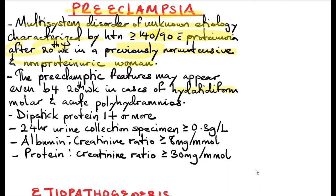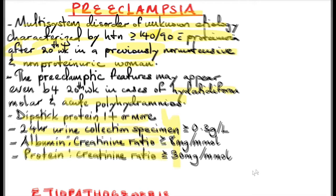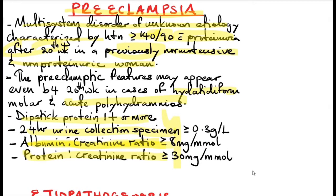This is seen in cases of molar pregnancy and acute polyhydramnios. To make a diagnosis of proteinuria, you can use a dipstick protein, a 24-hour urine collection specimen, and the albumin to creatinine ratio or protein to creatinine ratio. The albumin creatinine ratio and the protein creatinine ratio are more specific and sensitive than the dipstick and 24-hour urine specimen.